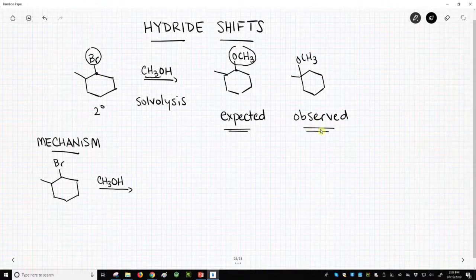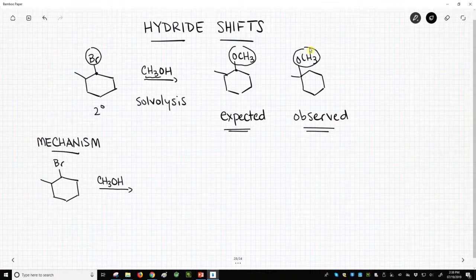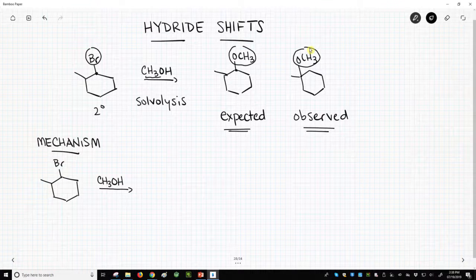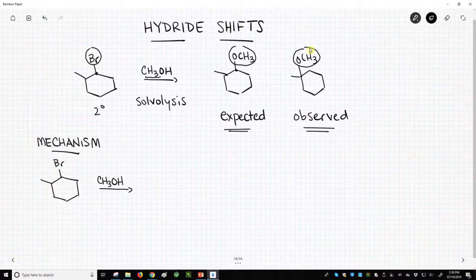The observed product has the methoxy group one carbon over. That's kind of weird, so something must have happened. Let's try to understand what happened - we'll see this is pretty common, but we can understand and anticipate it pretty easily.